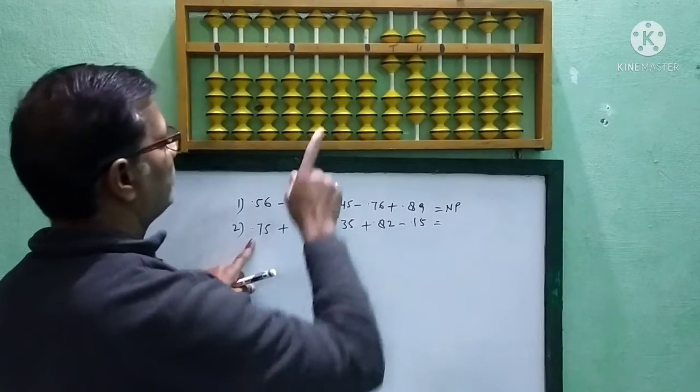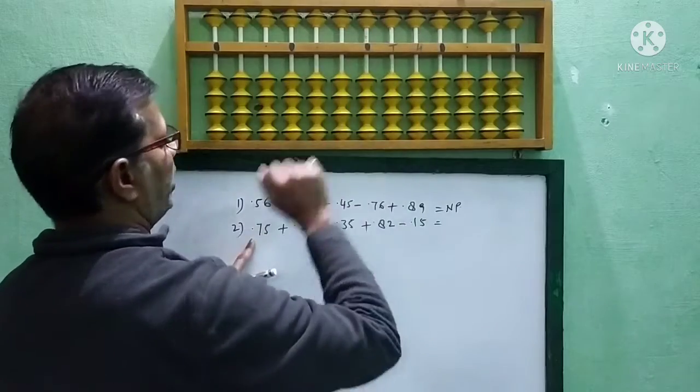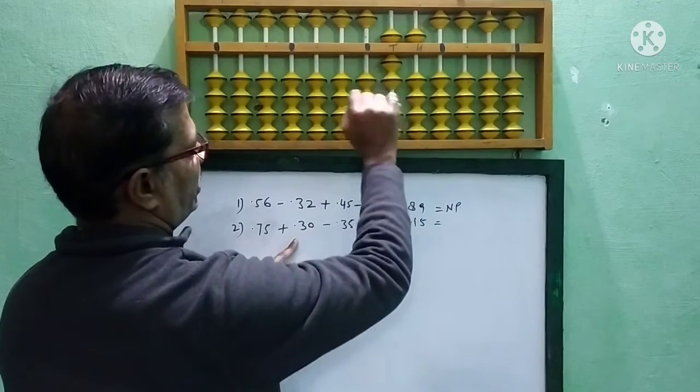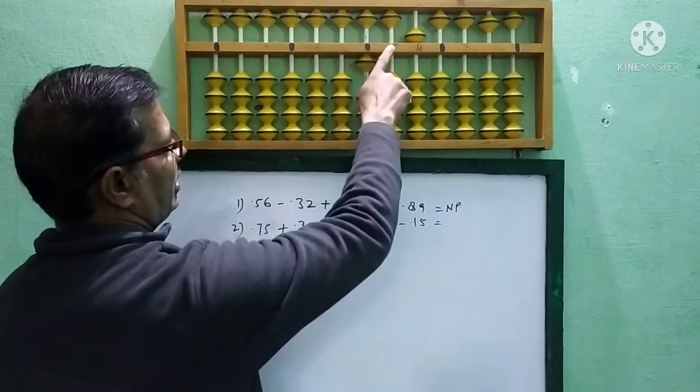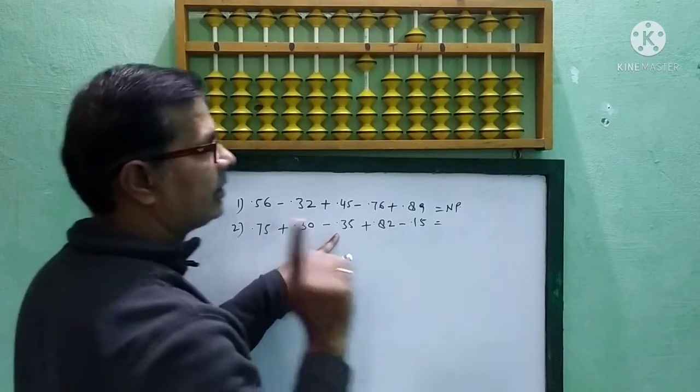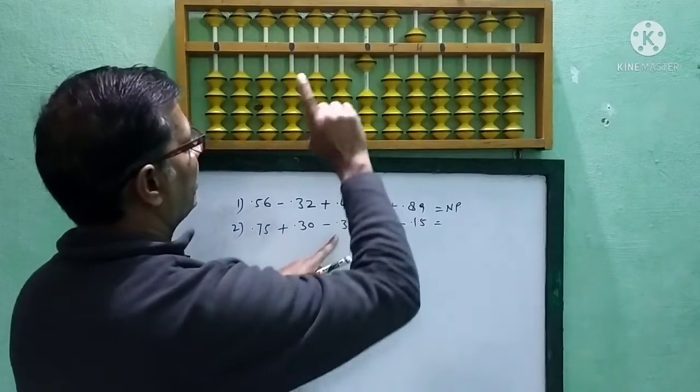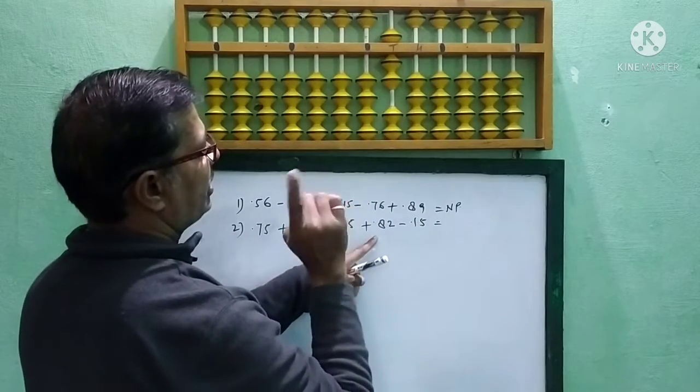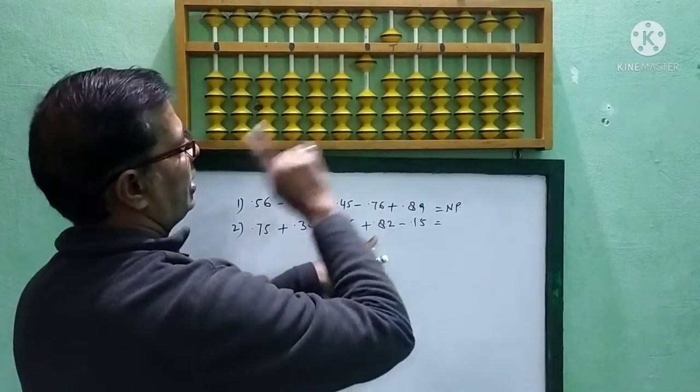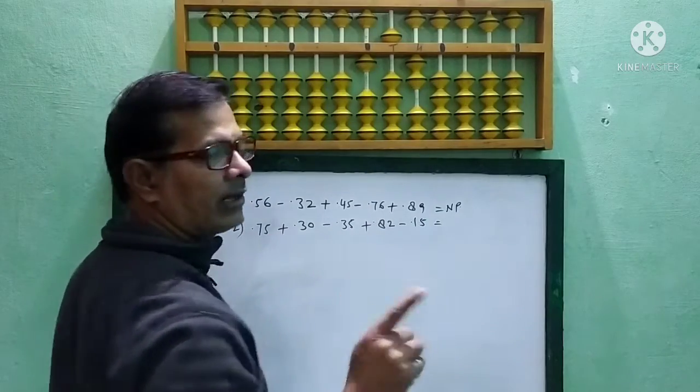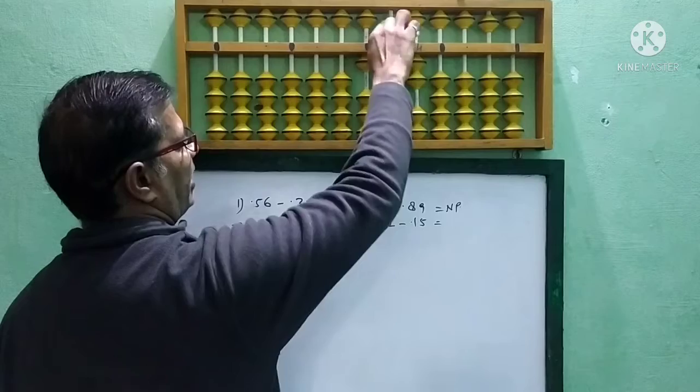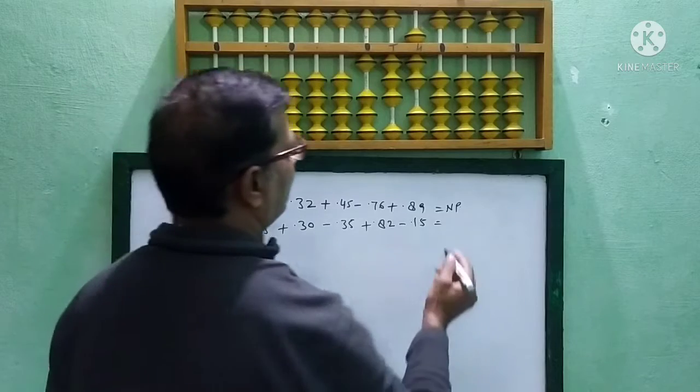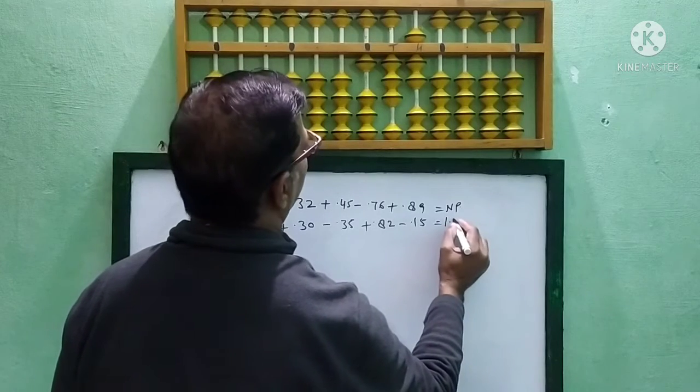Now, next question. 0.75 plus 0.30, plus 10 minus 7, 3 and then 0 here. Minus 3. Minus 0.35, minus 5 minus 10 plus 7, 3 and then minus 5. Plus 0.82, 8 plus 10 minus 2, 8 and then 2. Minus 0.15, minus 1 minus 5 plus 4, 1 and then minus 5 minus 10 plus 5. So, your answer is here, 1.37.